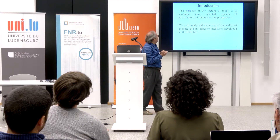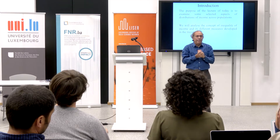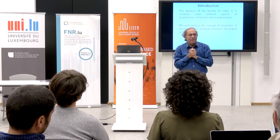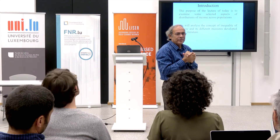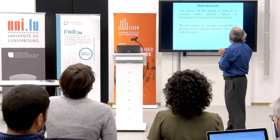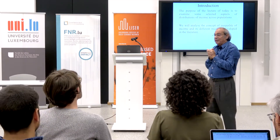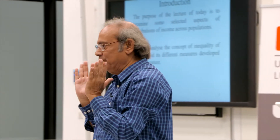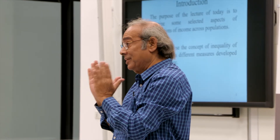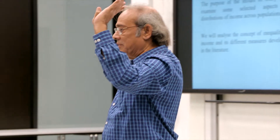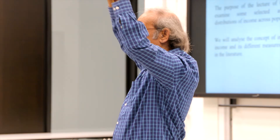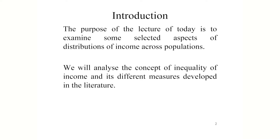We will analyze the concept of inequality of income and its different measures developed in the literature. There are many ways of measuring income inequality. We will first look at some selected measures and ask: is it possible that these selected measures become helpful in reaching a specific conclusion so that we can unambiguously tell something — that we can conclude without needing to calculate inequality by any specific measure?